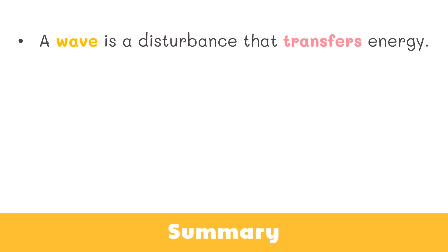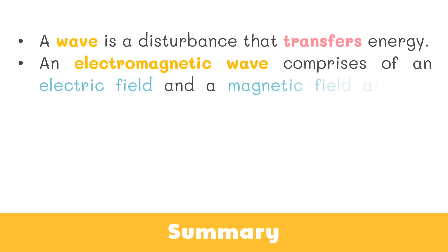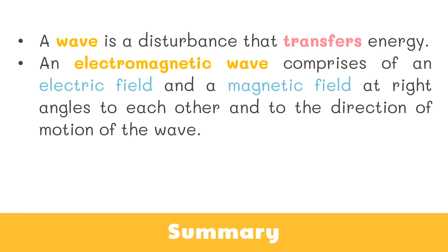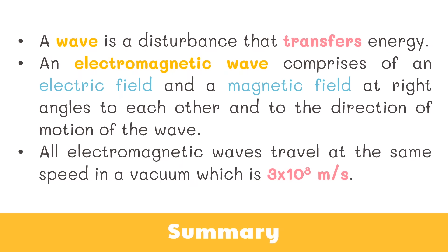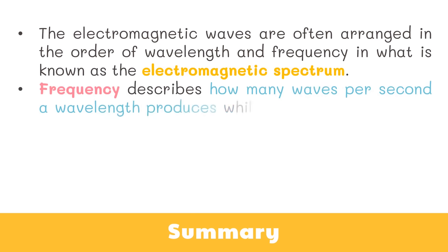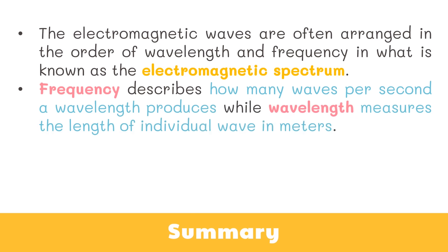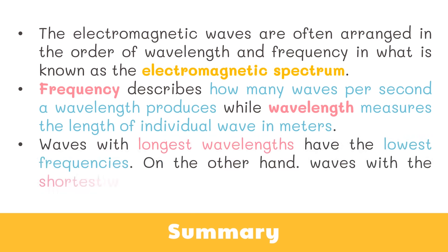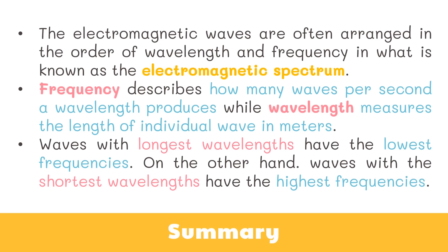Now let's wrap things up. A wave is a disturbance that transfers energy. An electromagnetic wave comprises an electric field and a magnetic field at right angles to each other and to the direction of motion of the wave. All electromagnetic waves travel at the same speed in a vacuum, which is 3 times 10 raised to the 8th power meters per second. The electromagnetic waves are often arranged by wavelength and frequency in the electromagnetic spectrum. Waves with the longest wavelengths have the lowest frequencies, while waves with the shortest wavelengths have the highest frequencies.